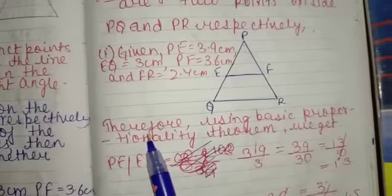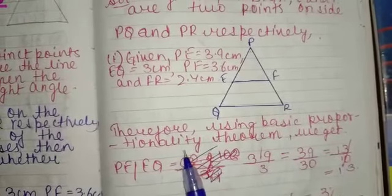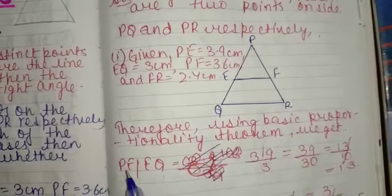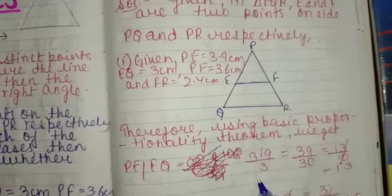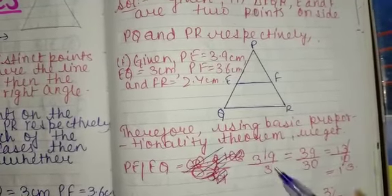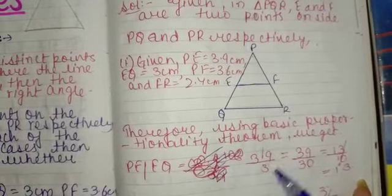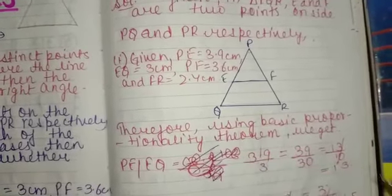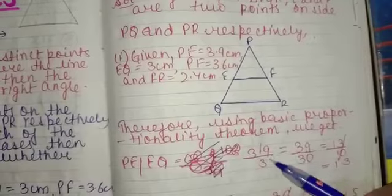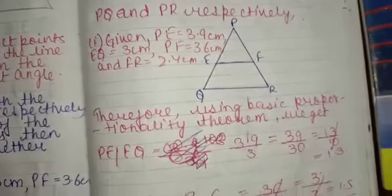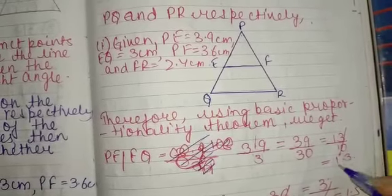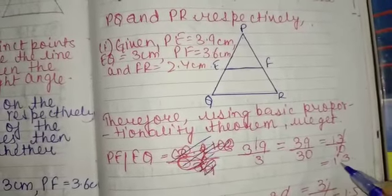Therefore, using basic proportionality theorem, we will get PE by EQ. If we find out, we will divide 3.9 by 3. When we remove the decimal, it will be 39 by 30, which equals 13 by 10. And when we divide it, it will be completely 1.3.